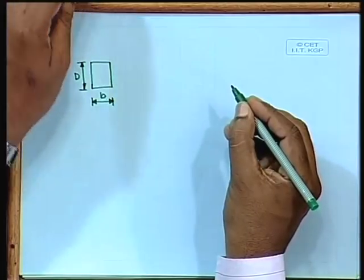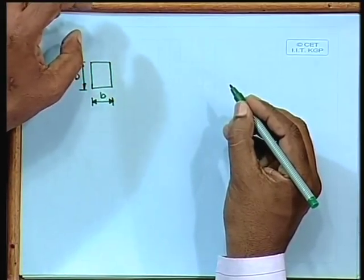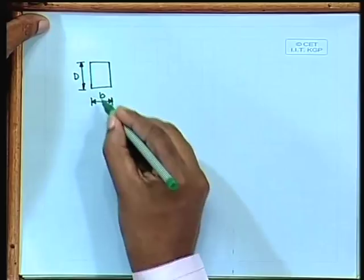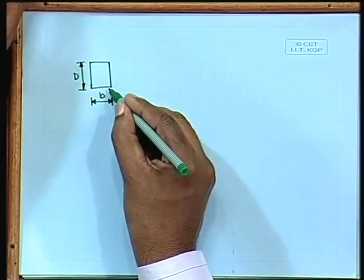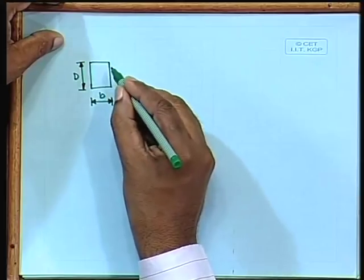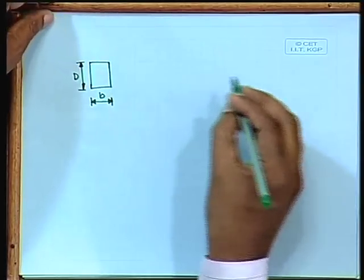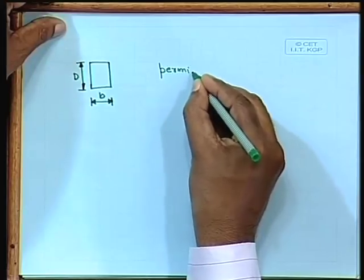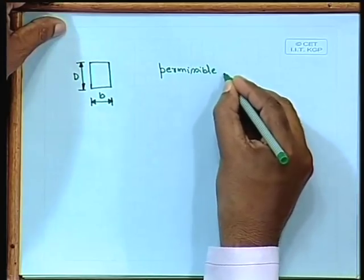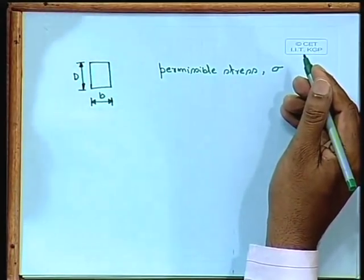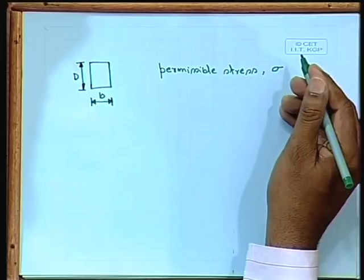We would like to provide this section for a beam. Since it is homogeneous, the permissible stresses at the top and at the bottom are the same. We consider a beam where the permissible stress is a certain limit — say sigma. If stress exceeds that value, we consider the section to have failed. That is the criterion we are considering here.